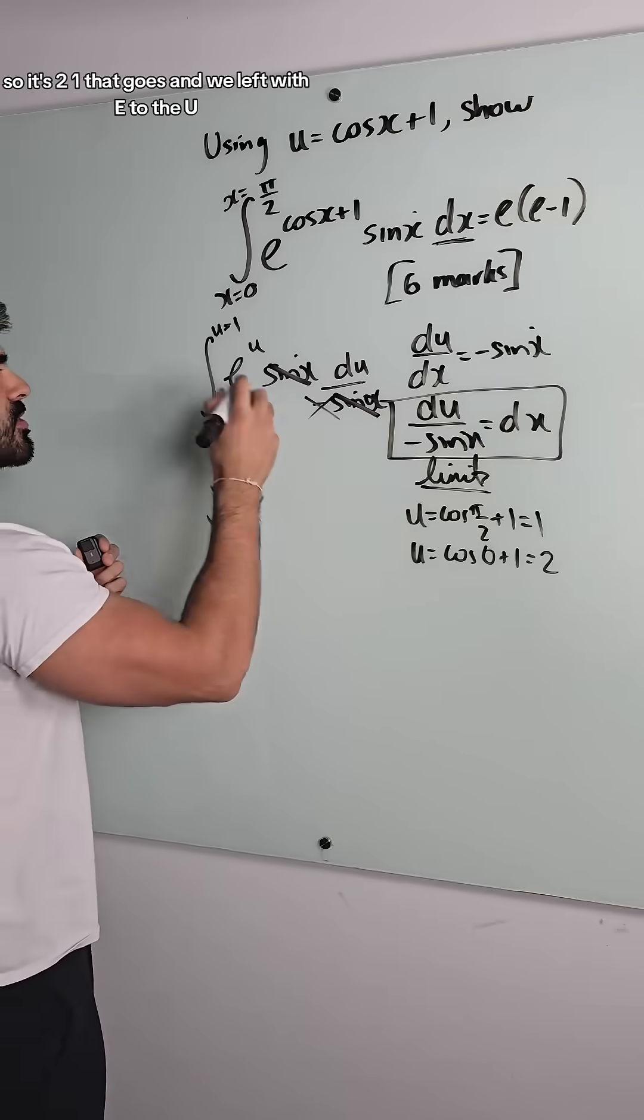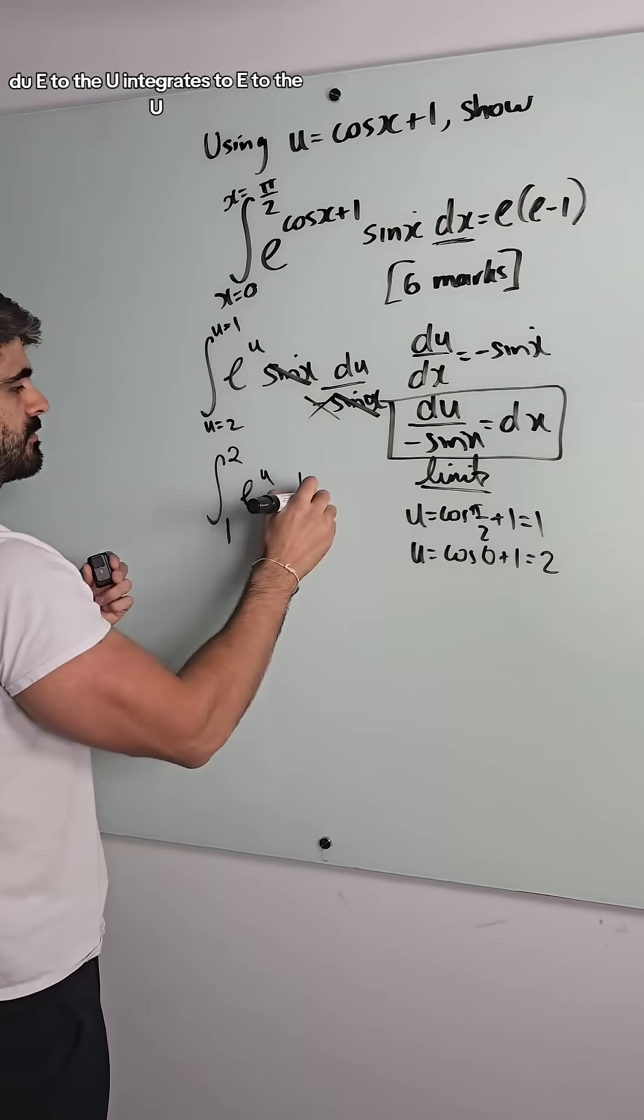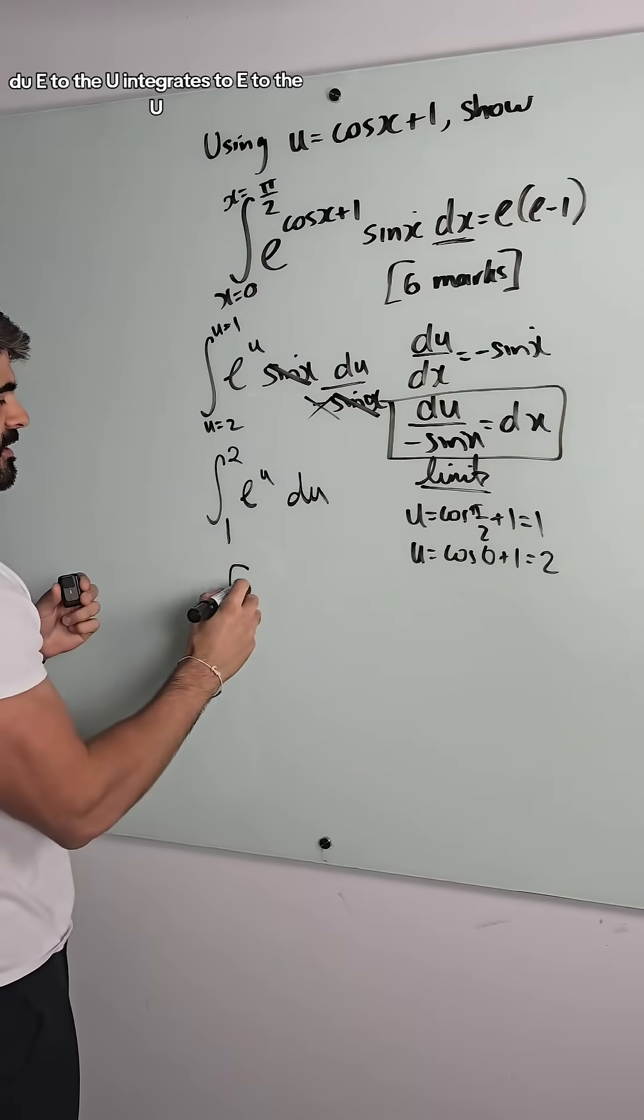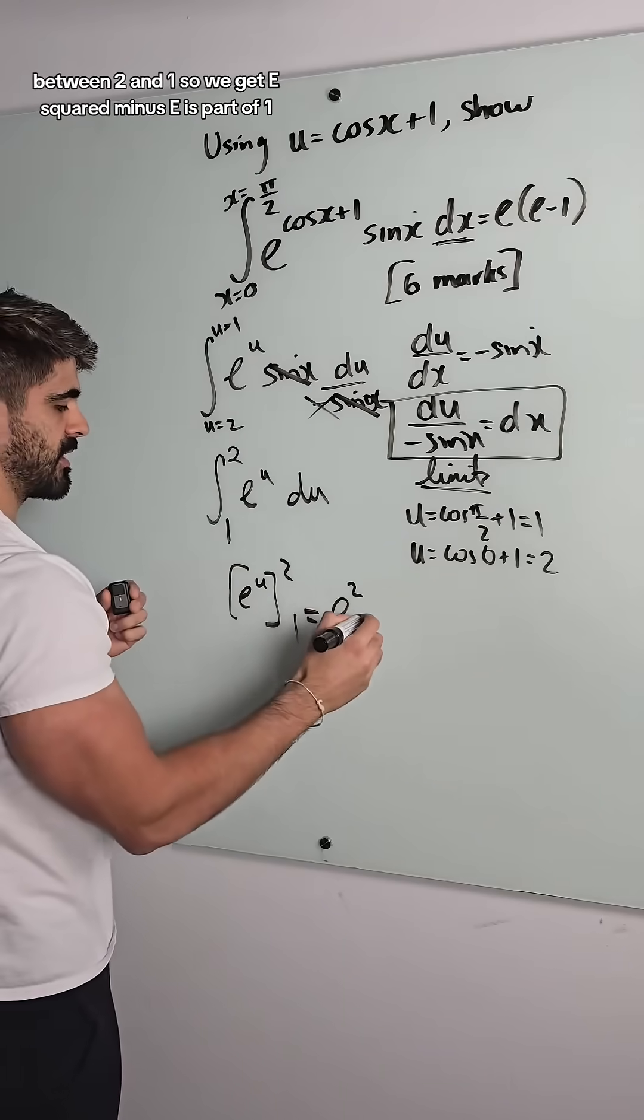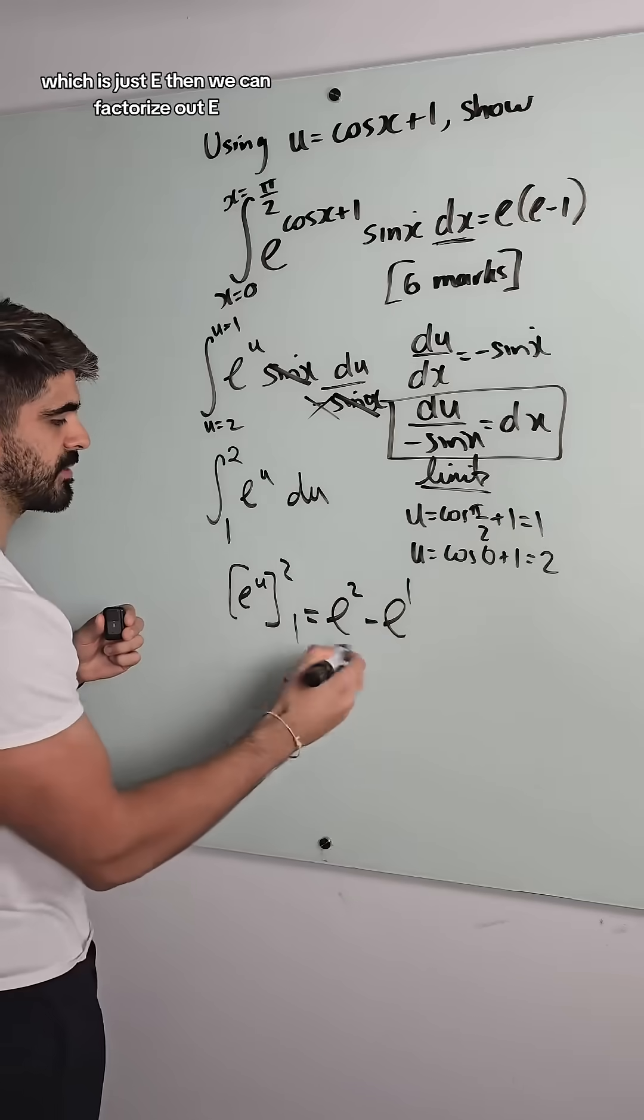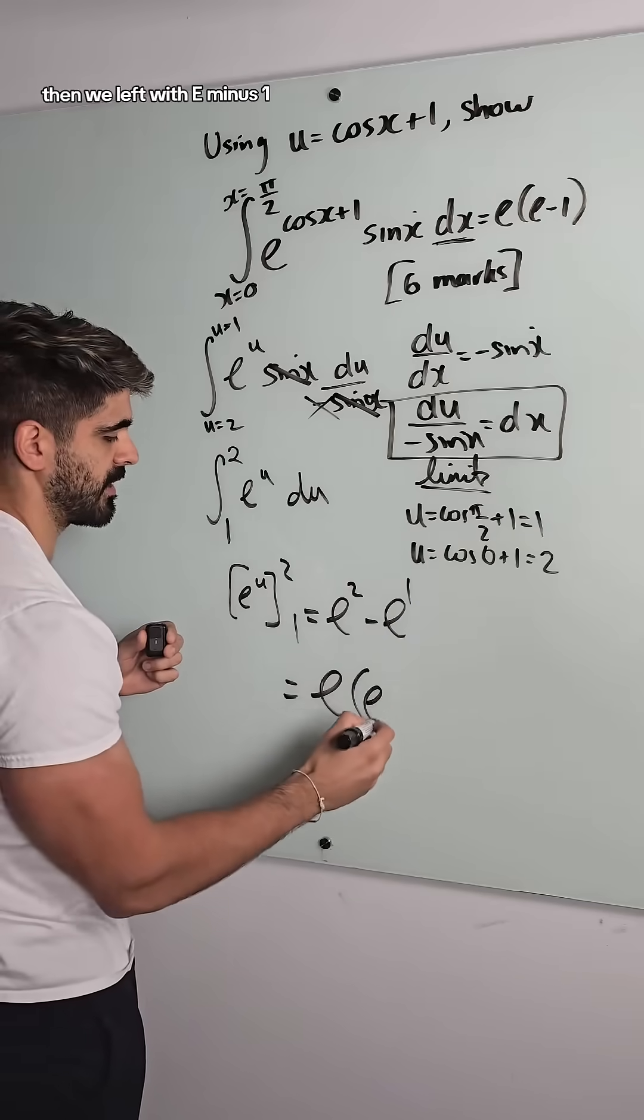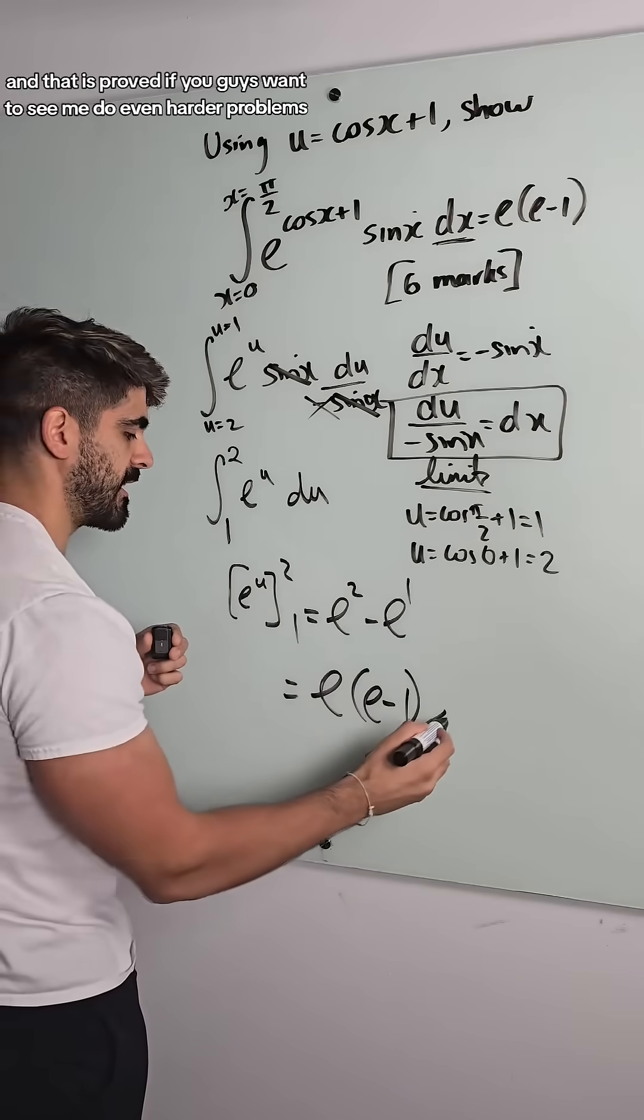All you do is get rid of that minus and you can flip the limit. So it's 2, 1. That goes and we're left with e to the u du. e to the u integrates to e to the u between 2 and 1. So we get e squared minus e to the power of 1, which is just e. Then we can factorize out e. And then we're left with e minus 1. And that is proved.